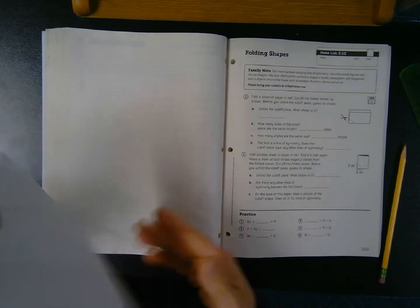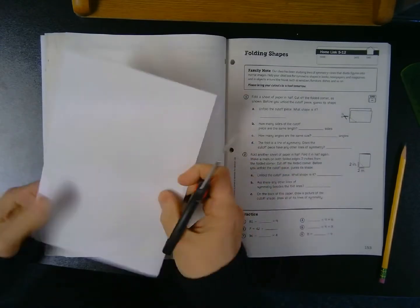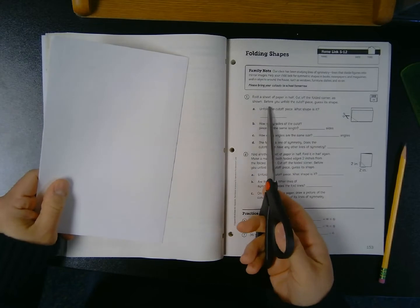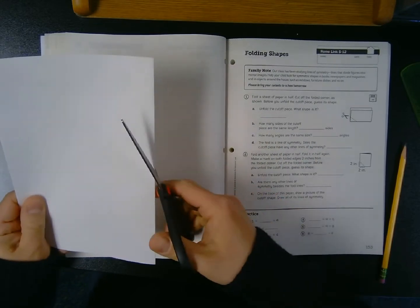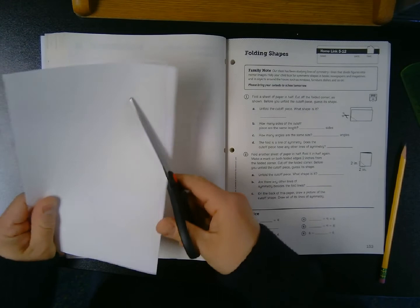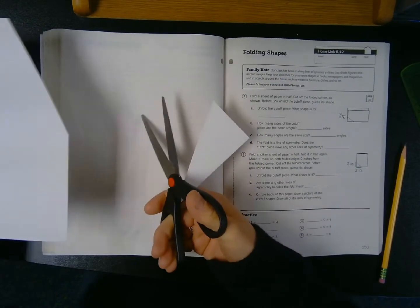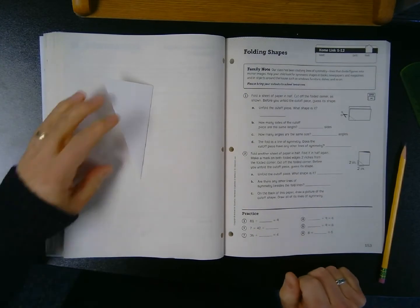And now that I've folded this sheet in half, I'm going to take my scissors, and I'm going to just cut off one of the corners. It says, cut off a folded corner, as shown, before you unfold the cutoff piece, guess its shape. So I'm just going to cut a diagonal, like about so, and then I'm going to discard, or put aside my large piece of paper, and I'm just going to think about my cutout here for a second.